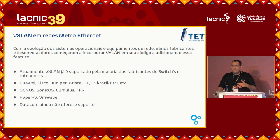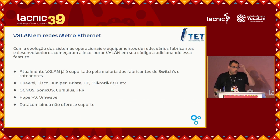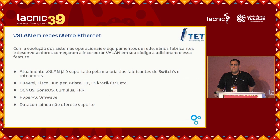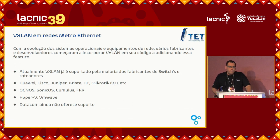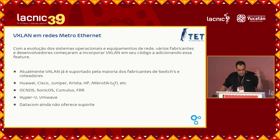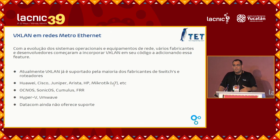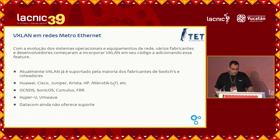VXLAN in Metro Ethernet networks. With the development of the OSes and network devices, several vendors and developers started to incorporate VXLAN in their code, adding this feature. These are already existing features in devices in production. At present, VXLAN is already supported by the majority of switch vendors and router vendors — for example, Huawei, Cisco, Juniper, Arista, HP, and Microtik only in version 7 — all already support this. These are routers and switches, brands that, as I said, already support VXLAN.